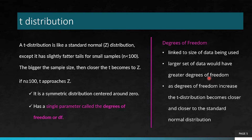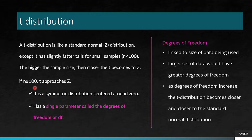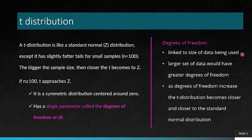A t-distribution is like a standard normal z-distribution, except that it has slightly fatter tails for small samples where n is less than 100. The bigger the sample size, the closer t becomes to z; if n is greater than 100, it approaches z. It is a symmetric distribution centered around zero, and it has a single parameter called the degrees of freedom, which is linked to the size of the data being used. As degrees of freedom increase, the t-distribution becomes closer and closer to the standard normal distribution.